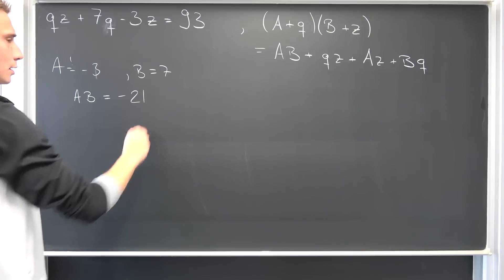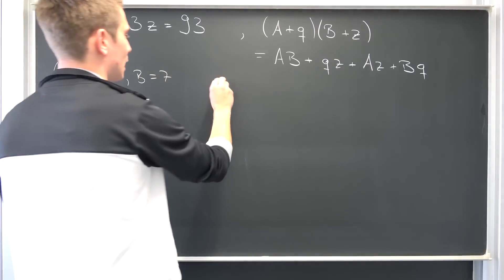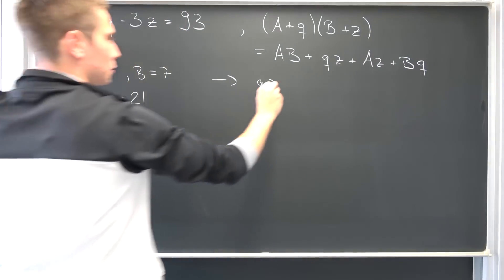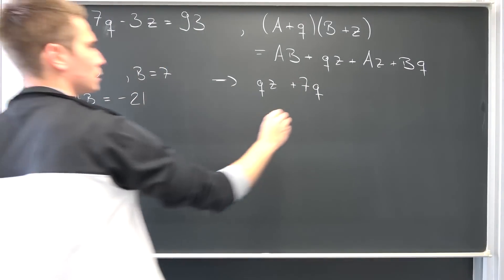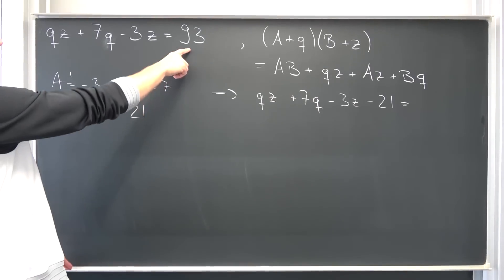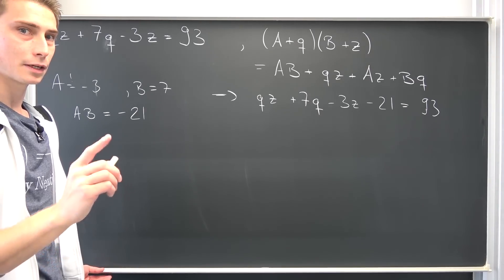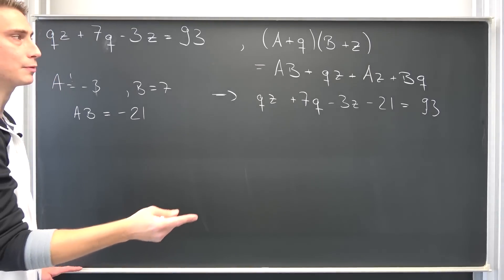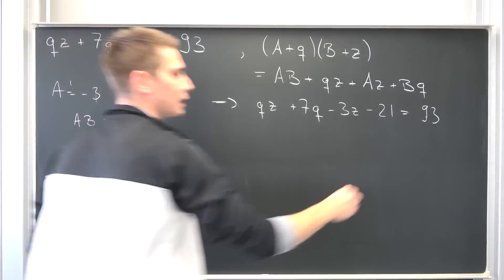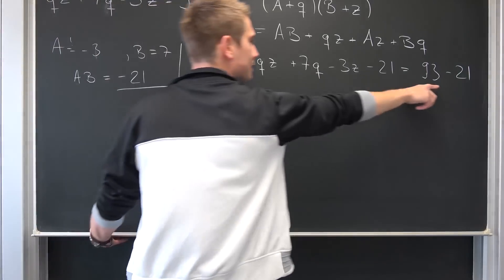It's thus negative 21. Meaning we can plug all of this stuff into here. Overall we're going to end up with qz plus 7q minus 3z minus 21 being equal to 93 minus 21. Do not get fooled, this is a different equation than we had before. What we were to do, we would have to add 21 to this whole thing to actually get back to what we had up here. This side is going to result in 72.